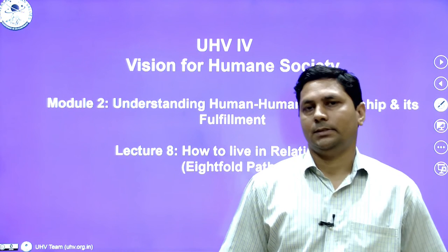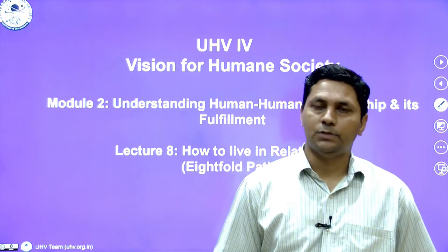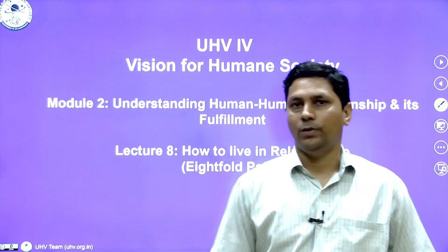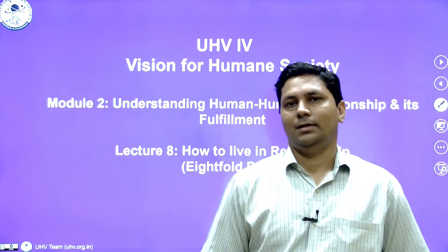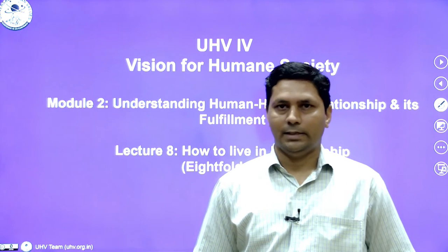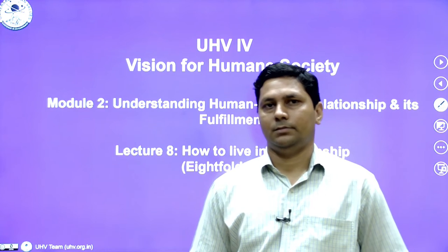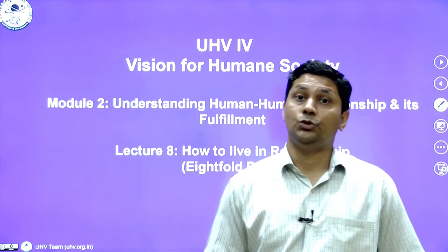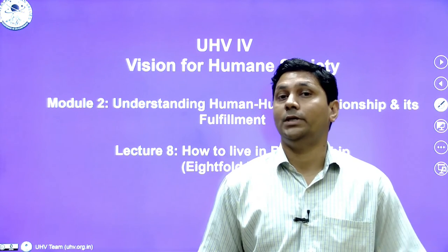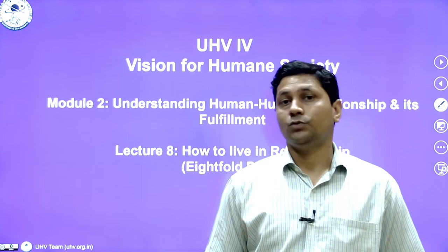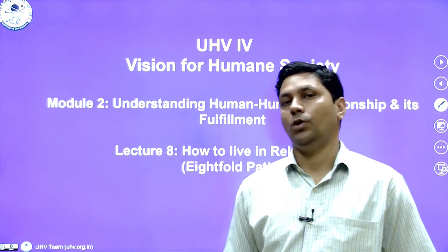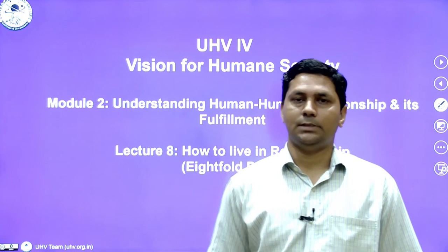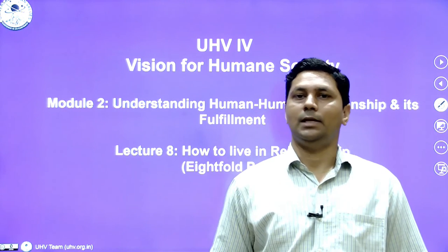In previous lectures we talked about established values, expressed values, then we saw relationship types with view 1 and view 2. From this lecture onwards, we are going to talk about various ways to ensure continuity of happiness and harmonious relationships. One of those formulations given in traditions is the 8-fold path, and we will see how it helps ensure harmonious relationships with everyone.